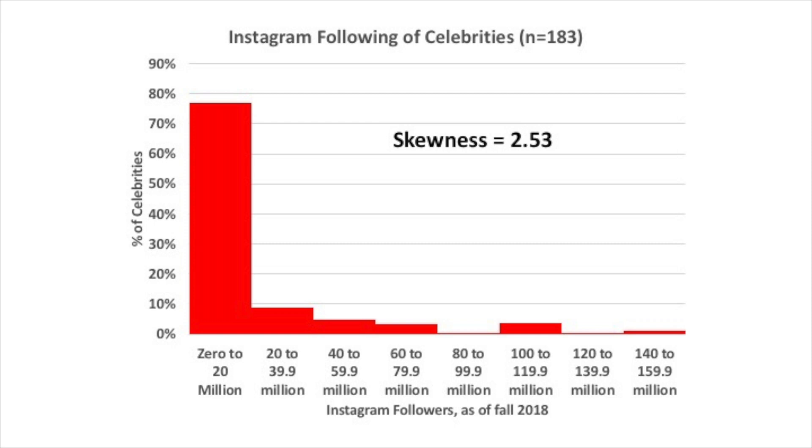Here's a histogram showing the Instagram following of celebrities, and unlike the histogram you just looked at, this one is highly skewed. In fact it's very skewed to the right, and the skewness statistic of 2.53 confirms this very strong skew. Because it's a skewed distribution, you'd use a five-number summary to characterize the center and spread.